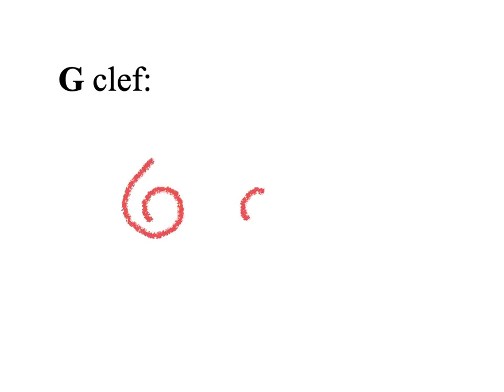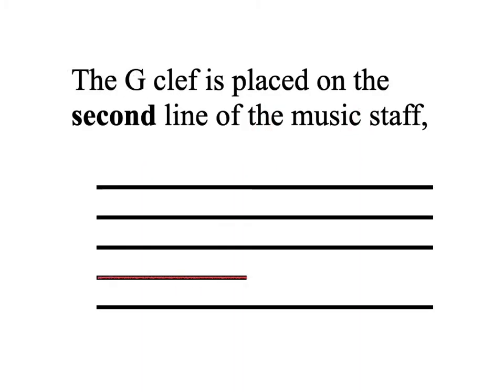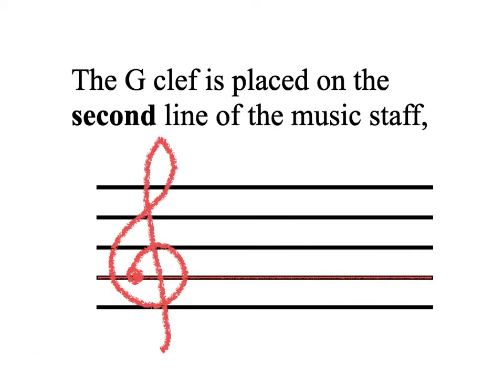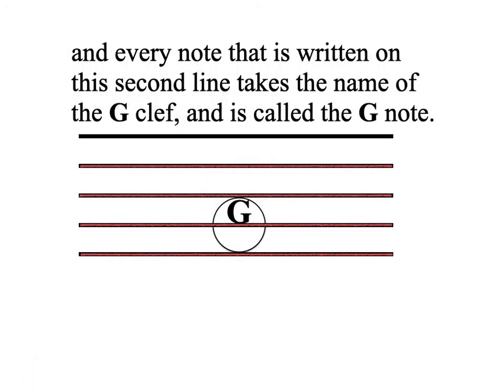G-clef. The G-clef is placed on the second line of the music staff. Thus, the second line takes the name of the G-clef, and every note that is written on this second line takes the name of the G-clef and is called the G-note.